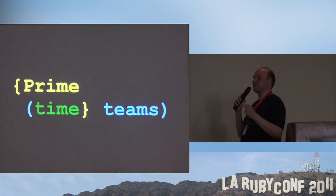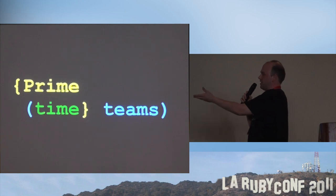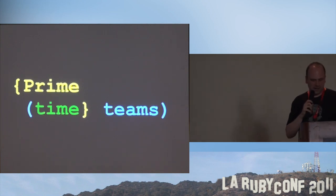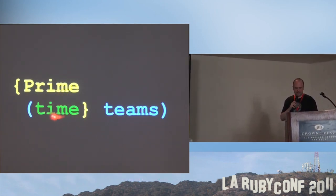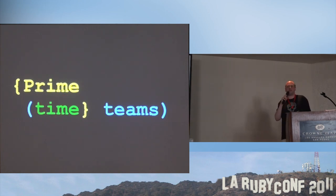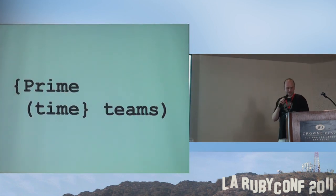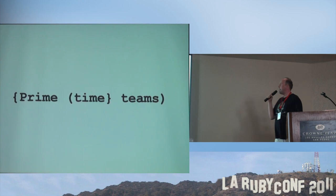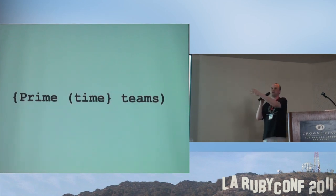We don't actually need to rely solely on indentation — we can throw in some punctuation. The primetime section is yellow, the time team section is blue, and the section that's in both gets yellow plus blue, which is green. But we can take the color out and even take out the indentation, and now we use punctuation to convey this unusual structure.